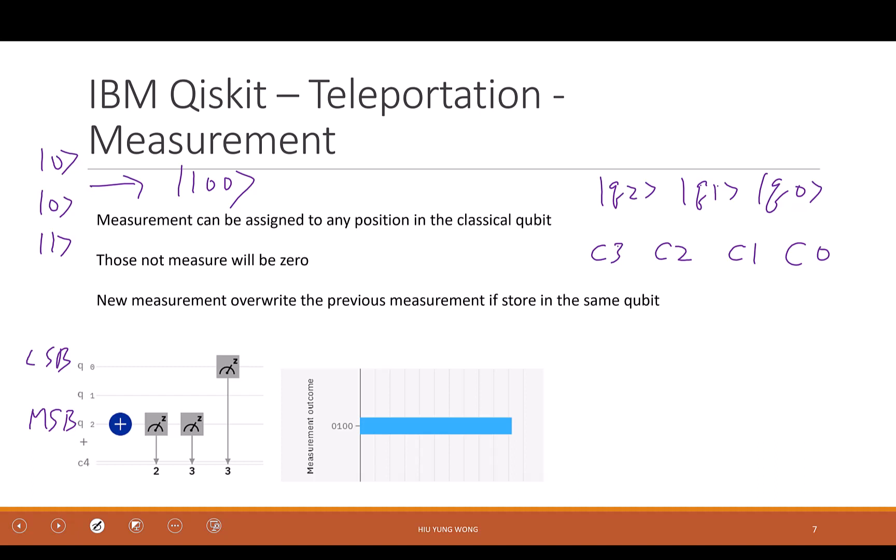I deliberately do that. But hold on. C4. However, for classical register, when they label it, this actually is for 4. This is for 3. This is for 2. This is for 1.